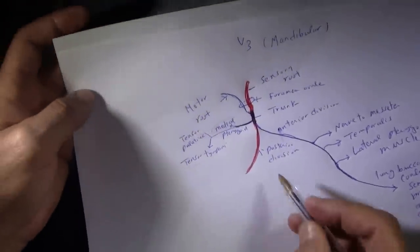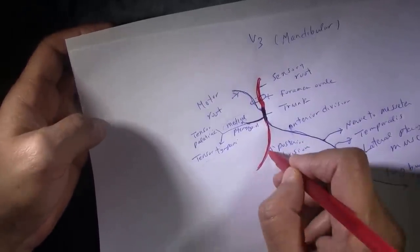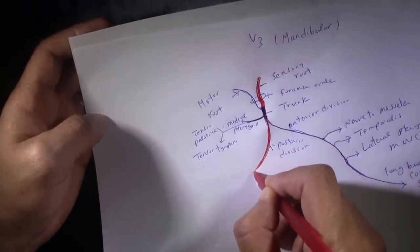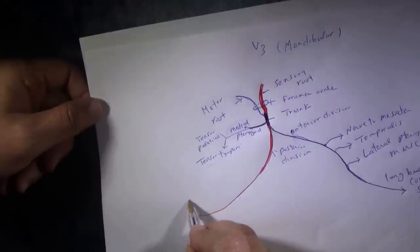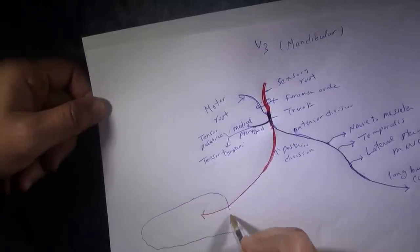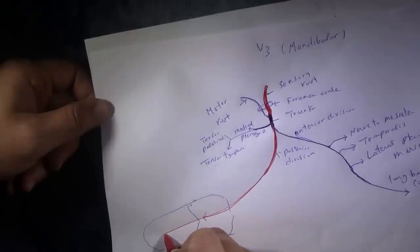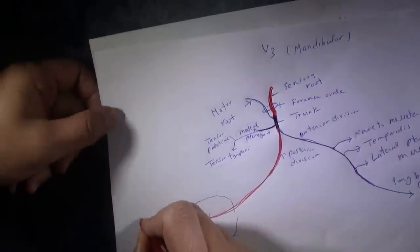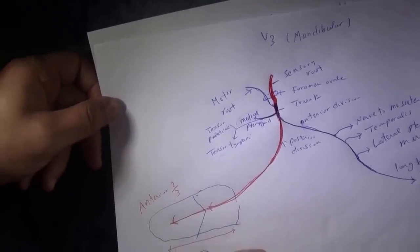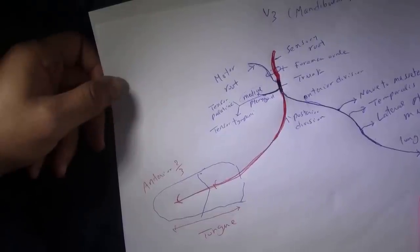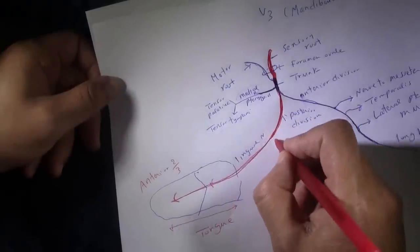The posterior division gives three important branches. The first is the lingual nerve, which supplies general sensation to the anterior two-thirds of the tongue.